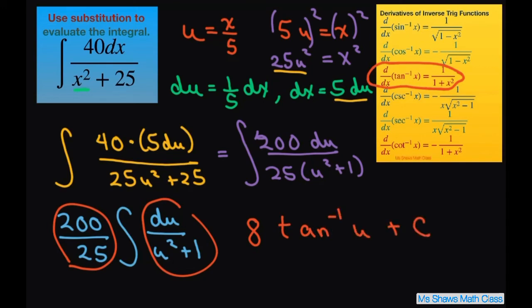And then all you have to do from here is substitute back in your u. So this is going to be 8 inverse tan of x divided by 5 plus c. And this will be your final answer.